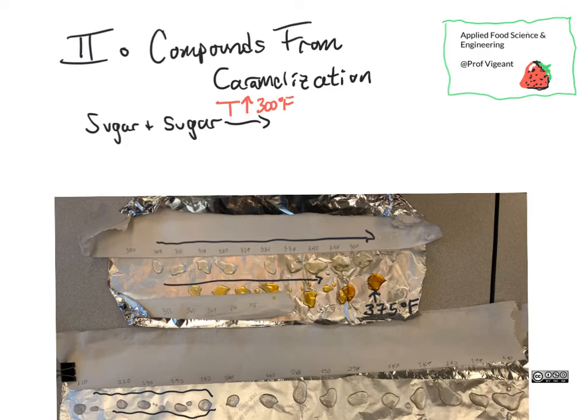No wonder people get these things confused — they're kind of happening at the same time and may be happening in the exact same place. We need sugars and proteins to get Maillard, and we need sugars and sugars to get caramelization. So some sugars will find other sugars under Maillard conditions, and this caramelization reaction also happens, producing flavors, aromas, and colors.